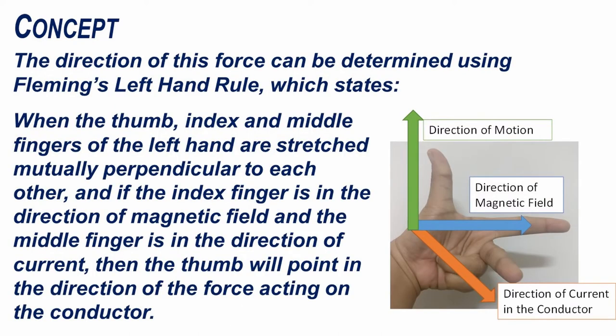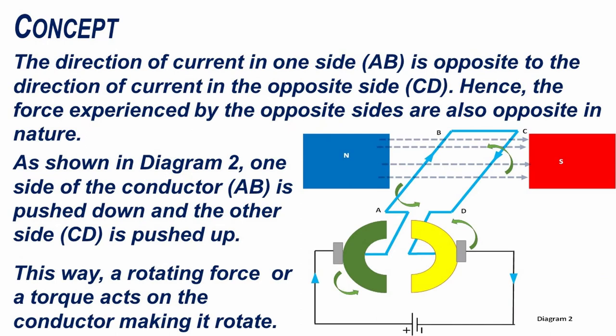The direction of this force can be determined using Fleming's left hand rule, which states: when the thumb, index and middle fingers of the left hand are stretched mutually perpendicular to each other, and if the index finger is in the direction of the magnetic field and the middle finger is in the direction of the current, then the thumb will point in the direction of the force acting on the conductor. The direction of current in one side, AB, is opposite to the direction of current in the opposite side, CD, of the conductor.